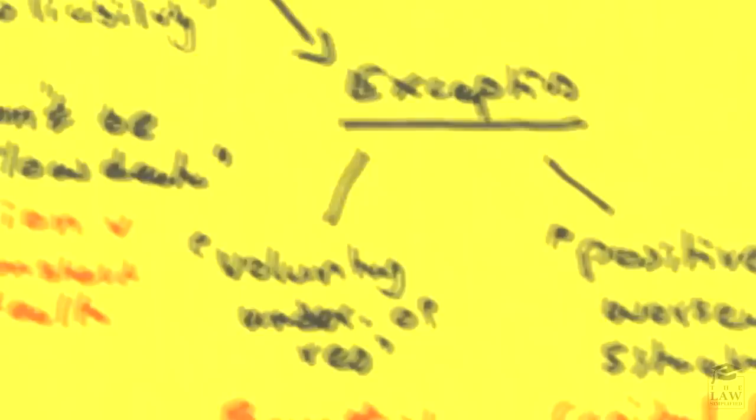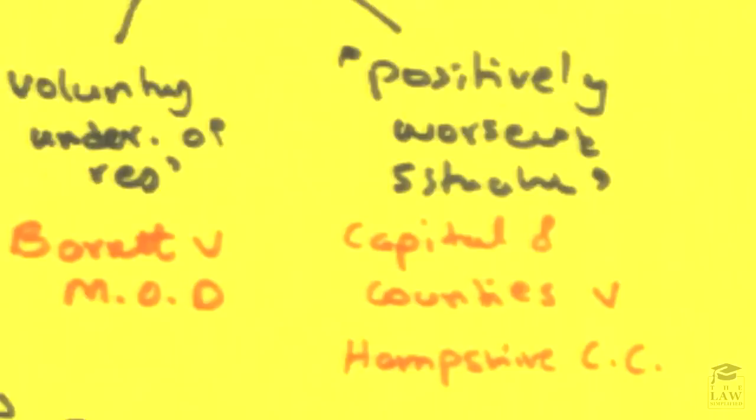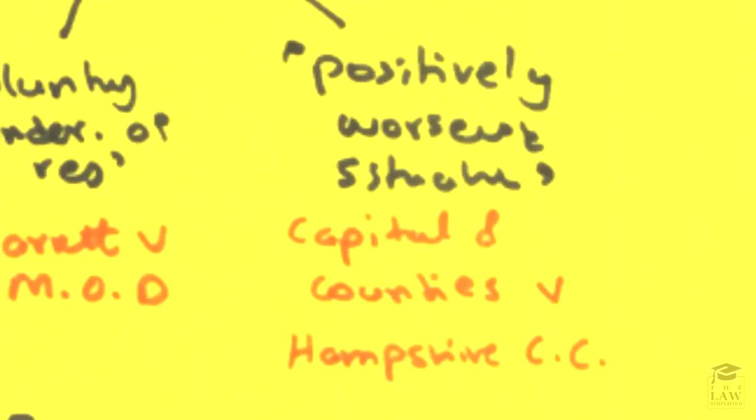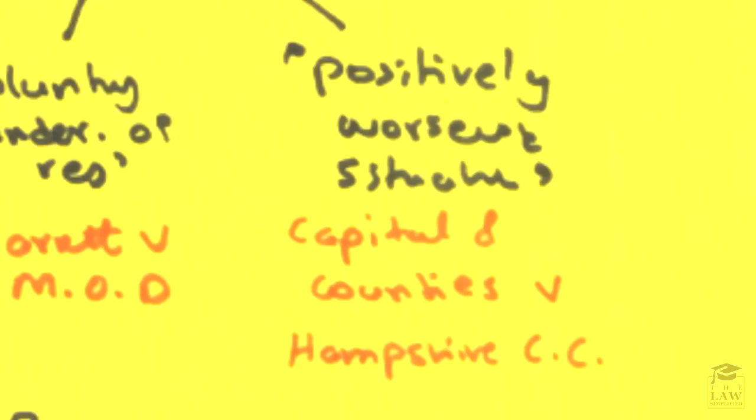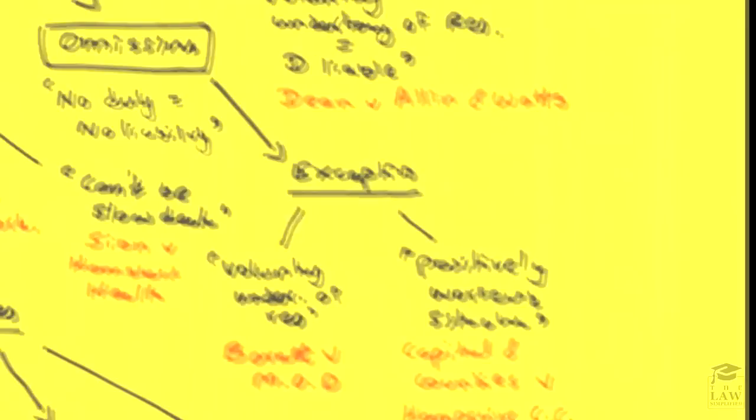However, there are exceptions to this. A very interesting case in this regard is Barrett v Ministry of Defence, where it was held that if you voluntarily undertake responsibility, there would be a duty owed. If breached, would cause you to be liable in a particular tort. Another instance is quite interestingly in the case of fire services, where if you positively worsen the situation by not acting, that also can become liable in your regard. Now the case of Capital and Counties v Hampshire County Council is a very good example for this. Have a look at it in the case summaries. It's an example to showcase where public authorities were held liable, and we'll look at why that is important a little bit later.